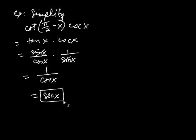So here we've seen how to make use of the even and odd identities and the cofunction identities. We'll also make use of those later when we establish identities more generally.